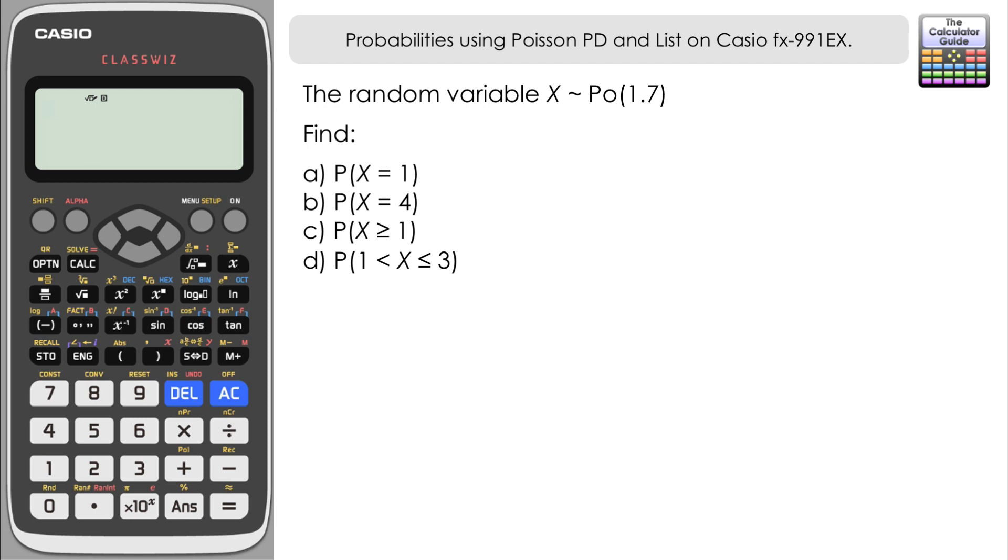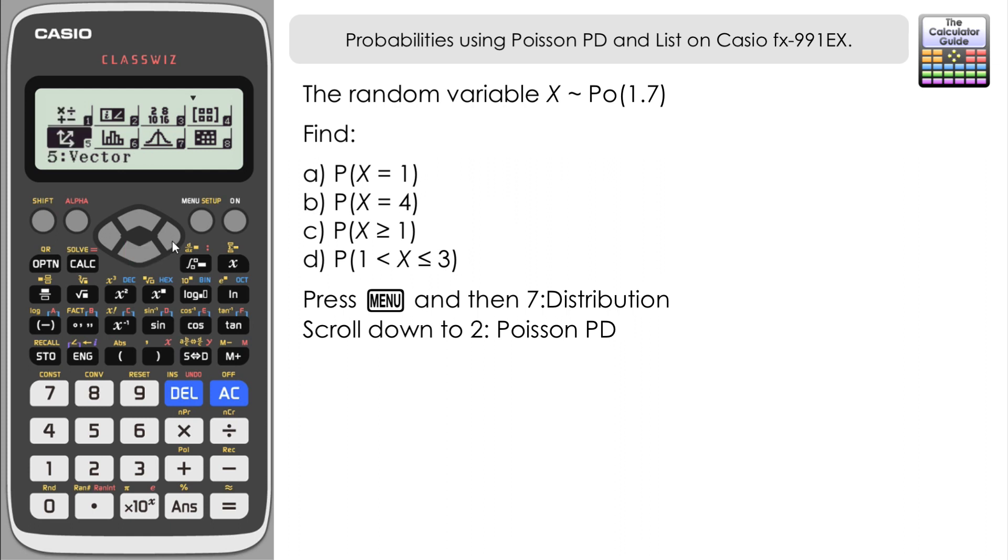We're going to use the probability distribution feature for the Poisson on the ClassWiz FX991EX to help us with this question. Press menu and then navigate to 7:Distribution, scroll down and then you want option 2 from the second menu, Poisson PD.